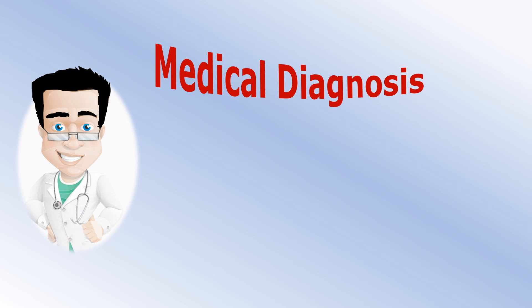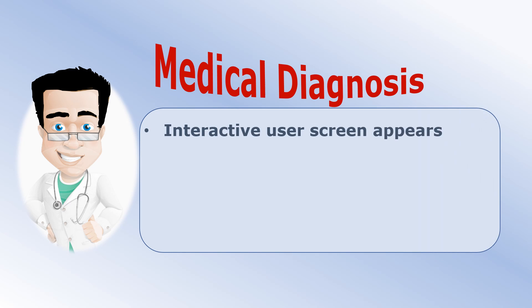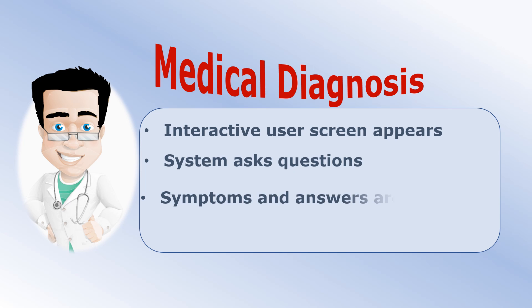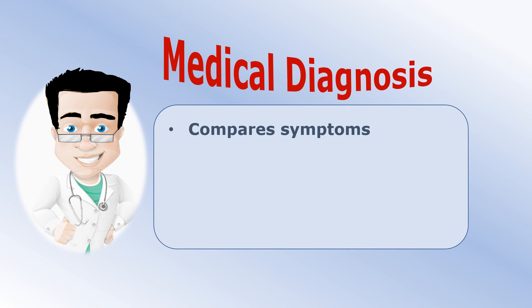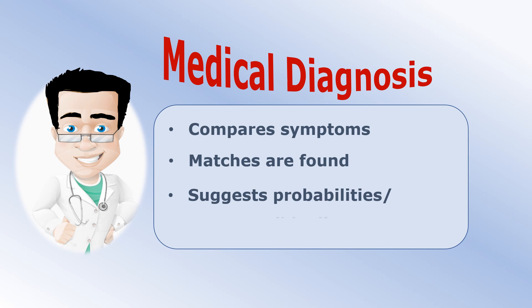Medical diagnosis is another example of where expert systems might be used. The process starts where an interactive user screen appears, questions are asked by the system, and symptoms and answers are typed in. Next, the expert system compares symptoms with those in the knowledge base using the inference engine and applying the rules base. Matches are found and possible diagnoses and advice are offered.